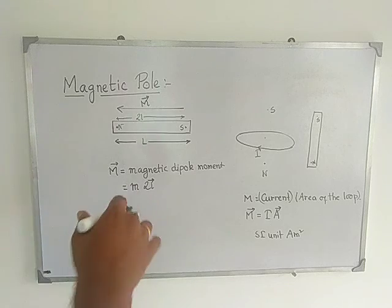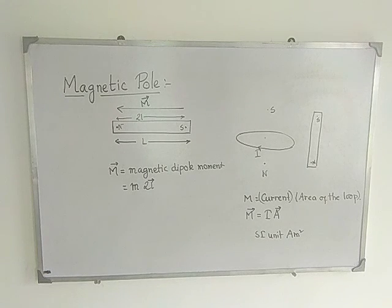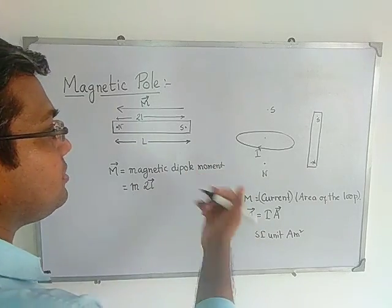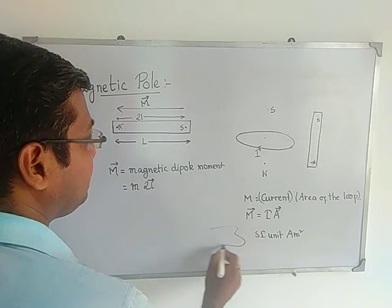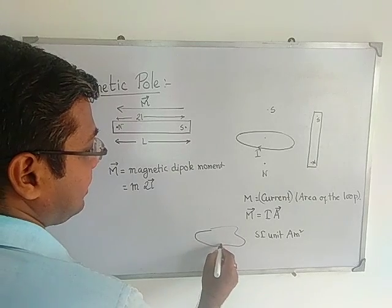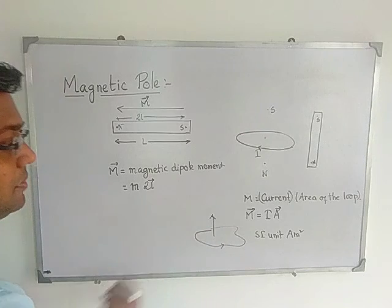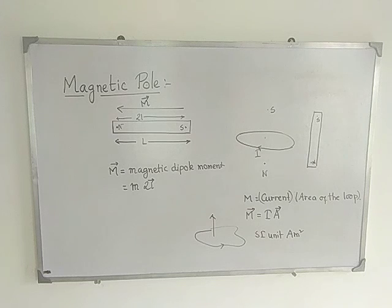The loop need not always be symmetrical — it may be of any regular shape. The magnetic dipole moment is in the direction perpendicular to the plane of the loop. So if the loop is simply like this and the current flows in a certain direction, then the magnetic dipole moment points perpendicular to that plane. This is the magnetic pole and magnetic dipole concept.